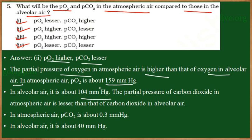Due to the difference in partial pressure of oxygen, there will be diffusion of oxygen from the atmosphere into the alveoli. The partial pressure of carbon dioxide is always less in the atmosphere compared to the alveoli — it is around 0.3 millimeters of mercury in the atmosphere, but in the alveoli it will be 40 millimeters of mercury. So there is a huge difference in the partial pressure of carbon dioxide.